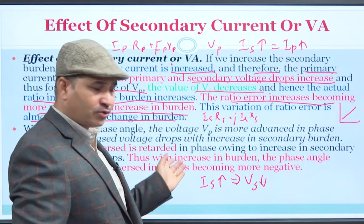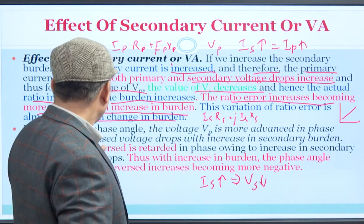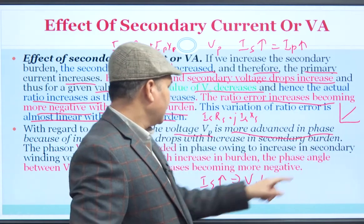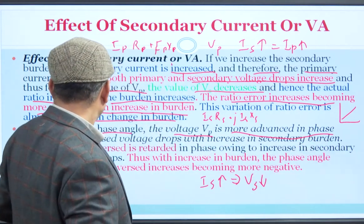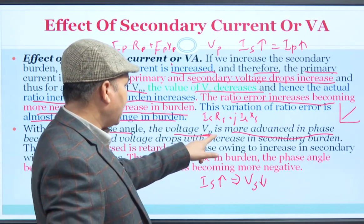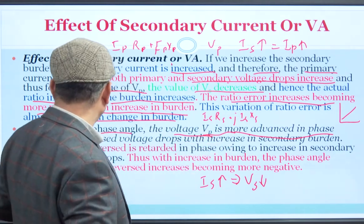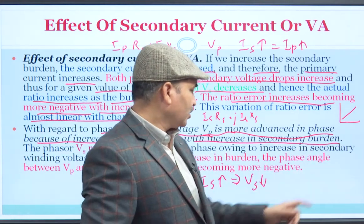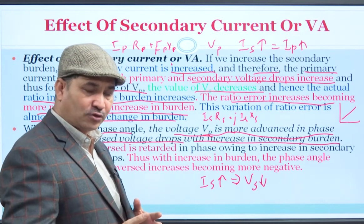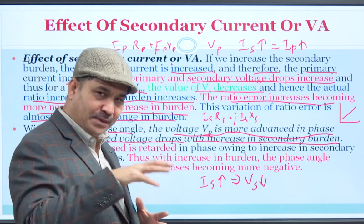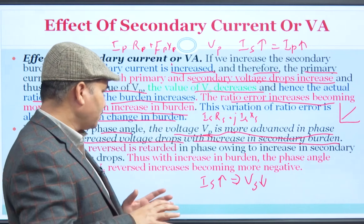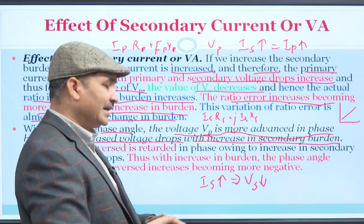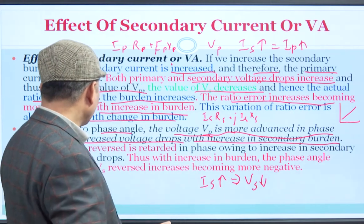With regard to the phase angle: Vp is more advanced in phase because of the increased voltage drops with the increase in secondary burden. Because as secondary burden increases, voltage drops increase and Vs decreases. When Vs is referred to the primary (i.e., Vs reversed), it is retarded — it lags. So the phase angle between Vp and reversed-Vs becomes more negative as burden increases, because Vp is ahead and reversed-Vs is further behind.